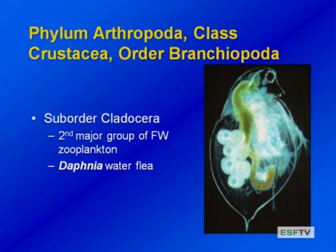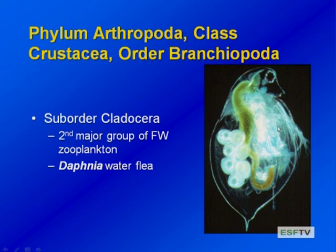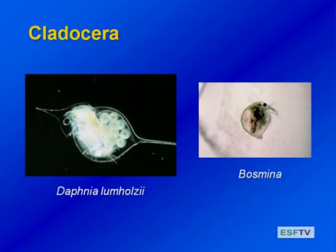The next major group of freshwater zooplankton are in the phylum Arthropoda, class Crustacea, in the order Branchiopoda or lung foot, and the suborder Cladocera. Our poster child for this group is Daphnia, the water flea. Here's its eye spot; it has legs used for swimming and feeding with fine hairs; you can see the green of algae it's eaten in the gut, eggs in the brood sack, and its exoskeleton. This is a side view of the Daphnia.